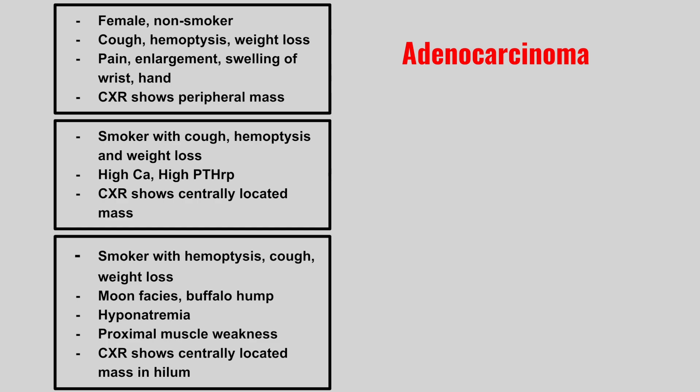Next, we have a patient who's a smoker with a cough, hemoptysis, and weight loss. High calcium and high PTHrP. Chest x-ray shows a centrally located mass. This is squamous cell carcinoma of the lung.